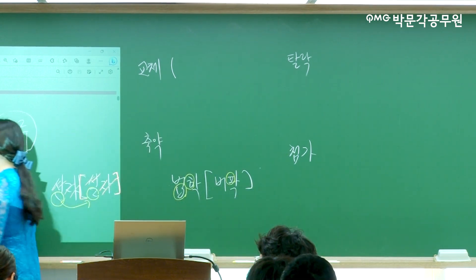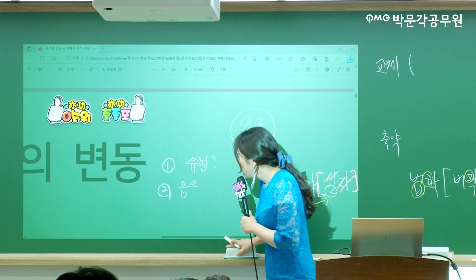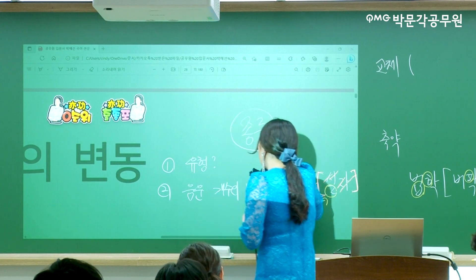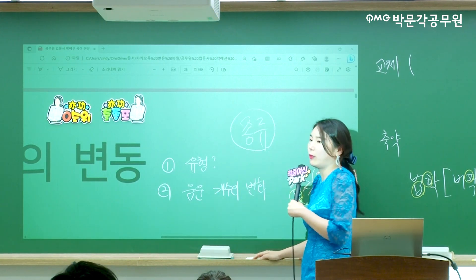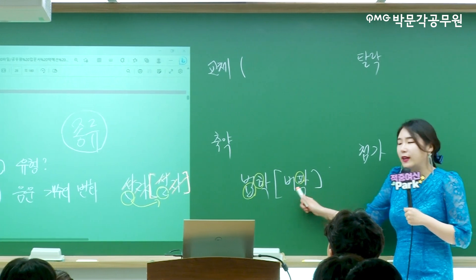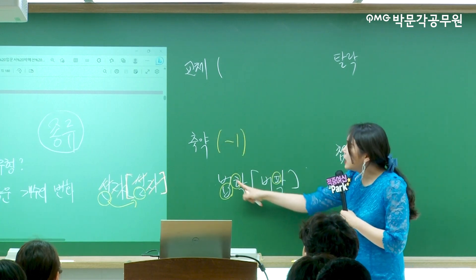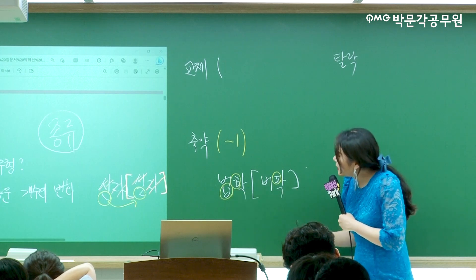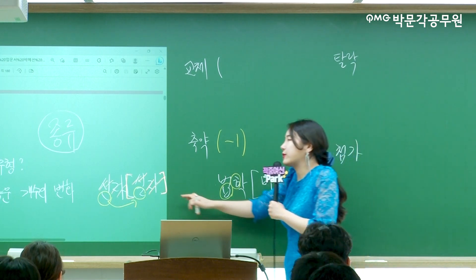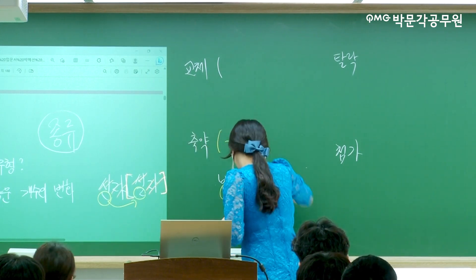두 번째로 물어보는 것은 음운 변동 전과 후의 음운 개수의 변화예요. 축약이 있으면 두 개가 하나로 줄었으니까 마이너스 1이라고 보면 돼요. 다 하나하나 세지 마세요. '신라'는 1대1 교체였으니까 음운 개수의 변화가 없어요. 교체는 0입니다.